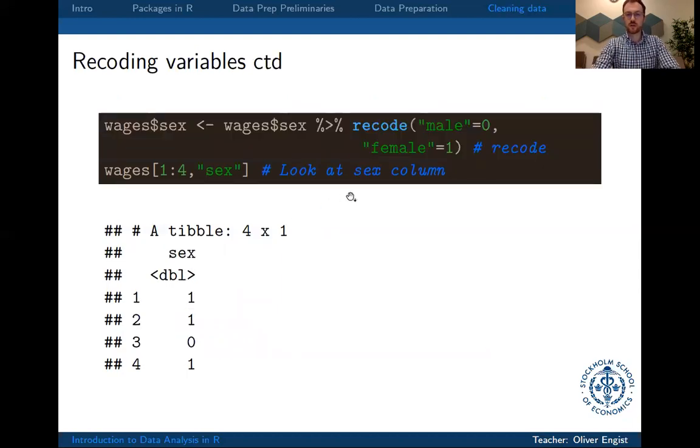Female or male, we would like to turn this into a numeric value, 0, 1. What we do is use the function recode and we just say what value we would like to have recoded, so this will be male, we would like to substitute this with 0, and the factor female, we would like to substitute with the value 1.